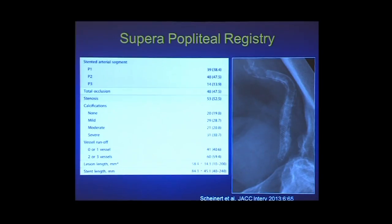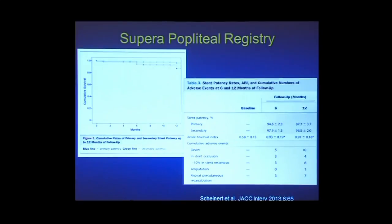The Supera Popliteal Registry, published in JACC Interventions and coming from Leipzig, looked at 101 patients using this nitinol-woven stent. They had occlusions in almost half the patients and a lesion length of about 5.8 centimeters. Their primary patency result was 87.7% at 12 months — to me, that's shocking. If that's really true, then this particular stent design, which flexes and bends almost like a slinky, may be part of the answer for the popliteal.